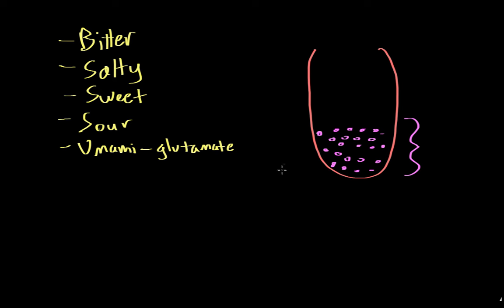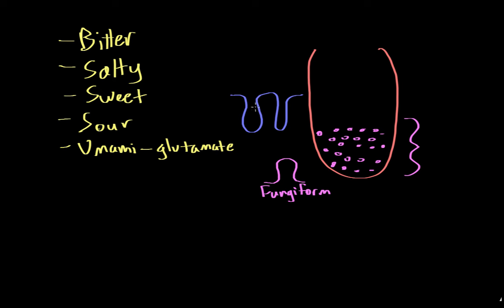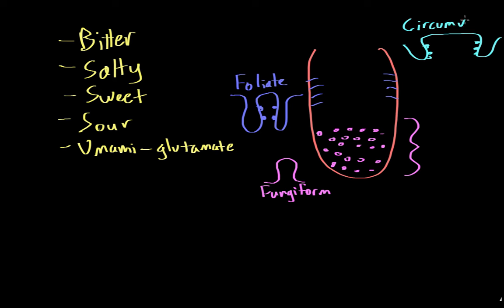There are three different types of taste buds. The first are known as fungiform taste buds, which are mostly found in the anterior part of the tongue. There are also foliate taste buds, which are mostly found on the sides of the tongue. And finally there are circumvallate taste buds, which are mostly found in the back of the tongue.